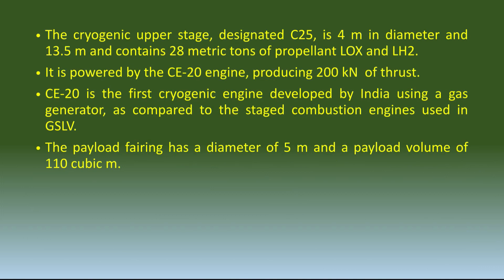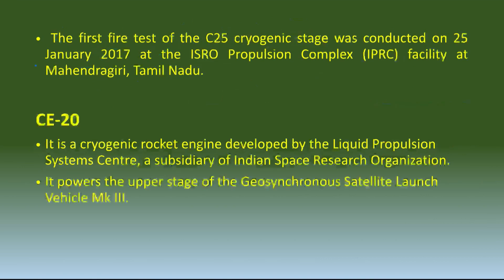Ab third stage ki baat karayen — joh cryogenic upper stage hai, it is also known as C25. Yahan par CE-20 engine use hota hai. CE-20 is the first cryogenic engine developed by India using a gas generator cycle. Yeh jo last upper stage hai, woh required thrust launch vehicle ko provide karti hai, and it is very much useful in interplanetary missions — suppose Mars pe jaana ho toh aise missions ke liye future mein yeh bahut zyada beneficial rahega. Iska first test 2017 mein hua tha by ISRO Propulsion Complex facility, Mahendragiri, Tamil Nadu.